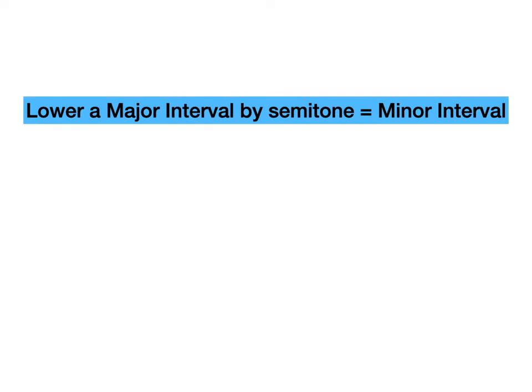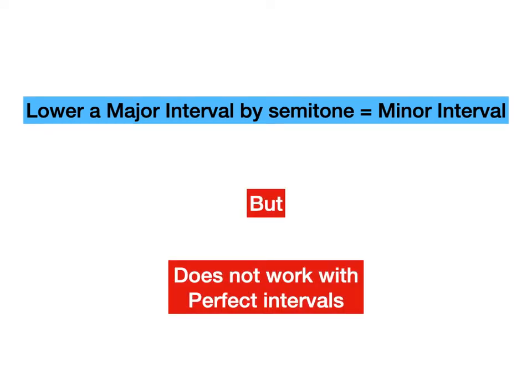So if you lower a major interval by a semitone, you get a minor interval. However, this does not work with perfect intervals. Perfect intervals only have one normal state and this is perfect. So if you see an interval of a fourth, fifth or octave, this will be perfect.